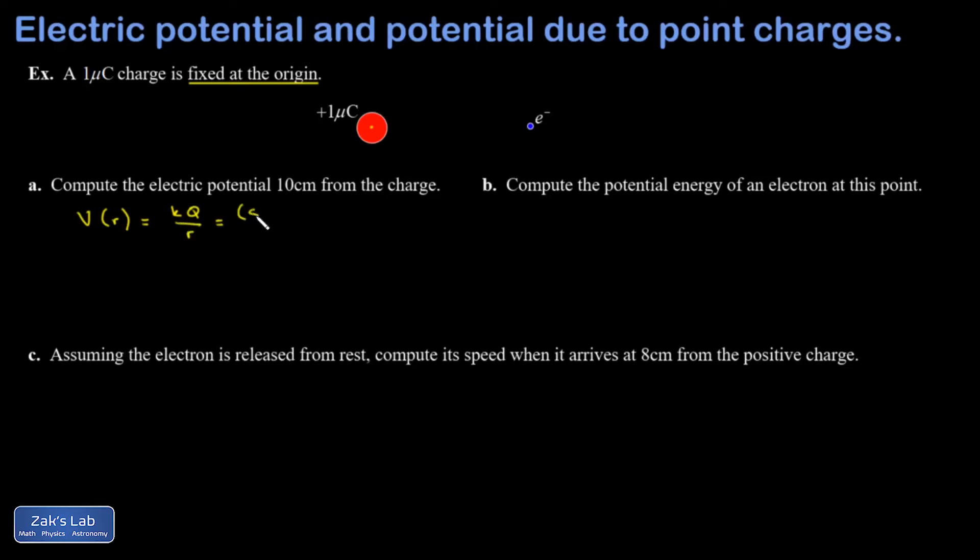K is the Coulomb's Law constant, 8.99 times 10 to the 9th newton meters squared per coulomb squared. Q is 1 microcoulomb. That's a millionth of a coulomb, so 10 to the negative 6th. And R is 10 centimeters or 0.1 meters. When I run the numbers on this, I get a potential of 89,900 volts.